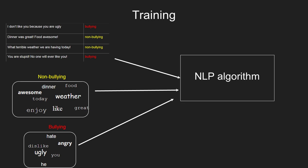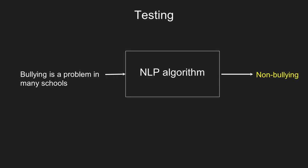The next process involves training the NLP algorithm based on our labels and features. This is done by providing the machine with lots and lots of text examples that include labels and features data. Finally, we test whether the machine will correctly label new text we provide. If we feed it with new text, our machine will look at the features and label it into either the bullying or non-bullying category.